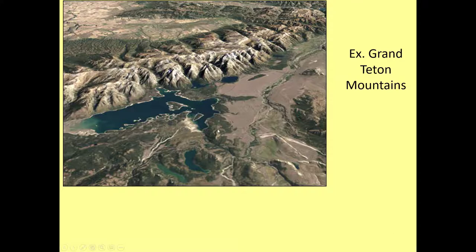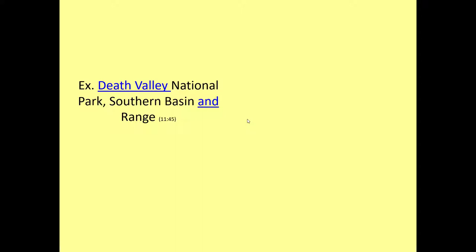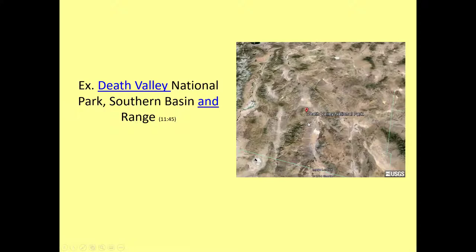The most extreme example of crustal extension is actually Death Valley National Park, which is in Southern California. You can trace out the outlines here — here is Nevada and Southern California, and this is the Mexican border.